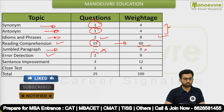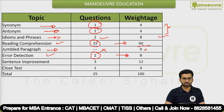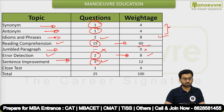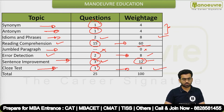For error detection, you can expect 2 questions — previous year had 2, so expect 2 to 3 questions worth 8 marks. Sentence improvement was significant — 3 questions came for 12 marks, which is good weightage. Finally, cloze test had 1 question for 4 marks. Total: 25 questions, 100 marks paper.